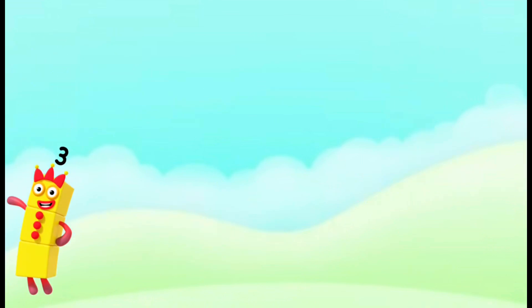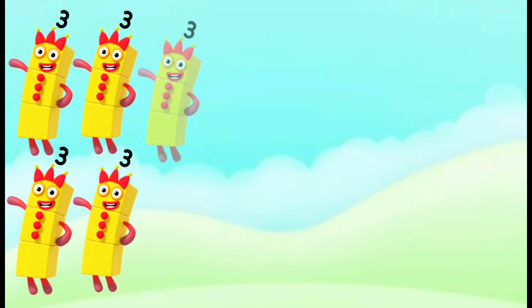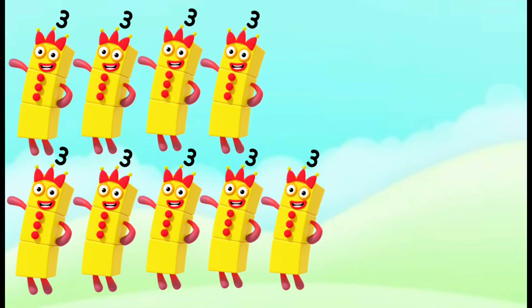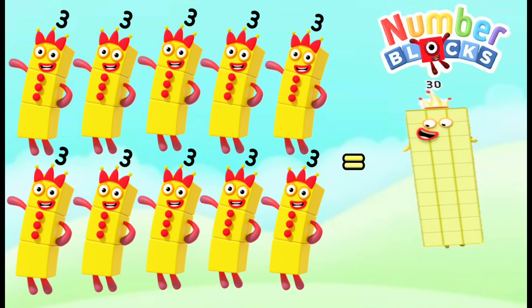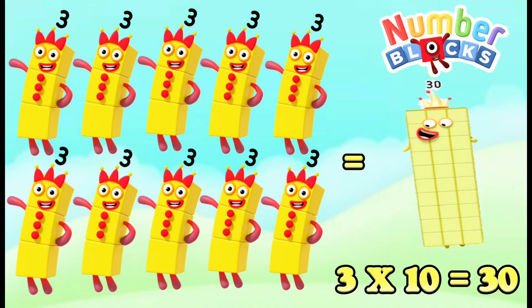3, 6, 9, 12, 15, 18, 21, 24, 27, and 30. If you add them all together, it's equals to 30. 3 times 10 is equals to 30 in multiplication.